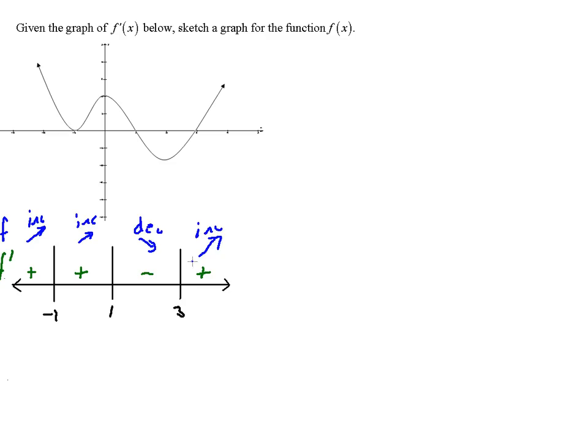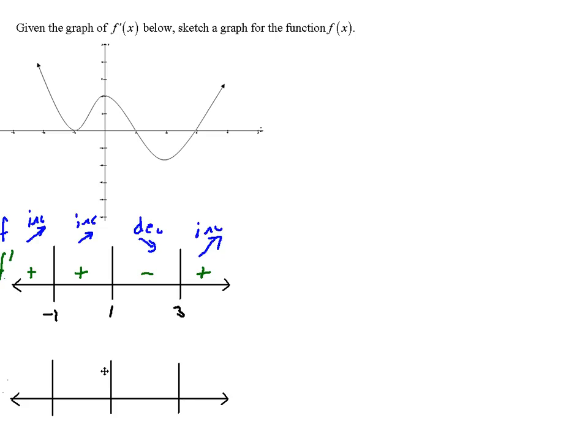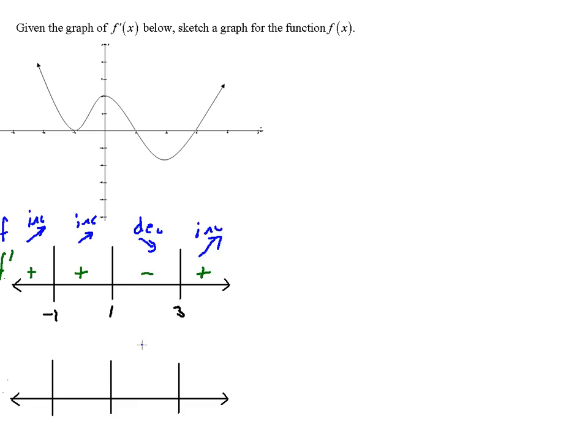Now we'll look at what F' can tell us about the concavity of F. It might sound a little funny, because we usually say what does F'' tell us about concavity. We say if F'' is positive, then F is concave up; if it's negative, then F is concave down. But the definition of concavity says: if F', the first derivative of F, is increasing, then F is concave up, and if it's decreasing, then F is concave down. Since F'' is the derivative of the first derivative, if F'' is positive, then F' is increasing, and therefore F is concave up — and likewise with decreasing and concave down.